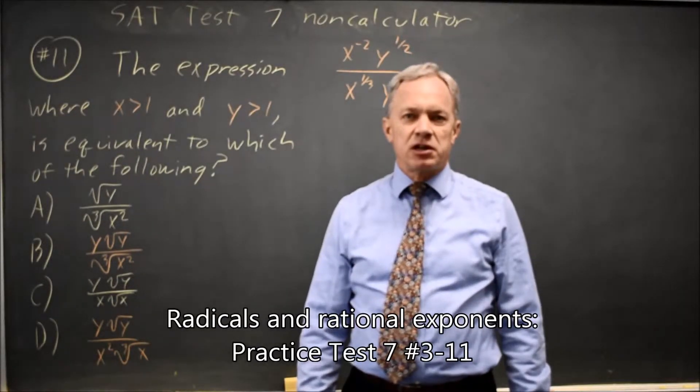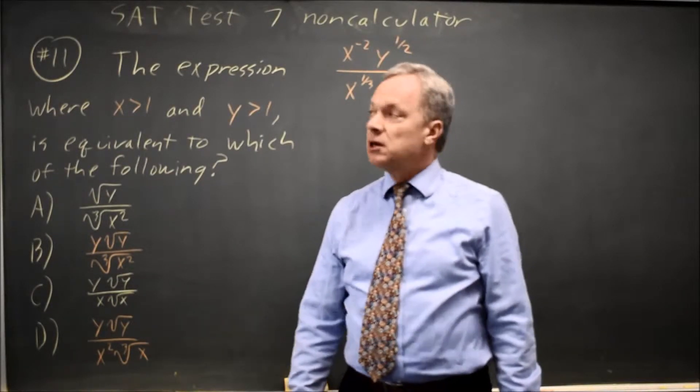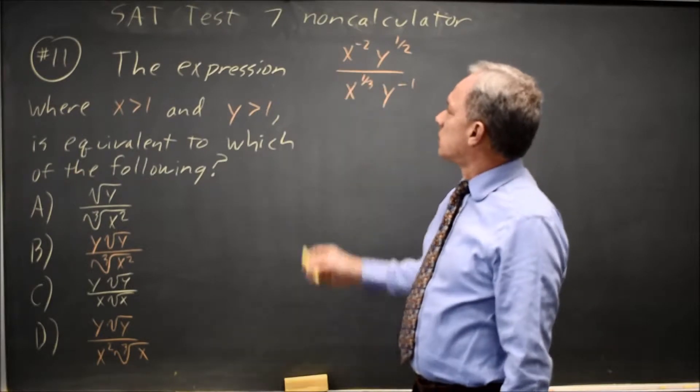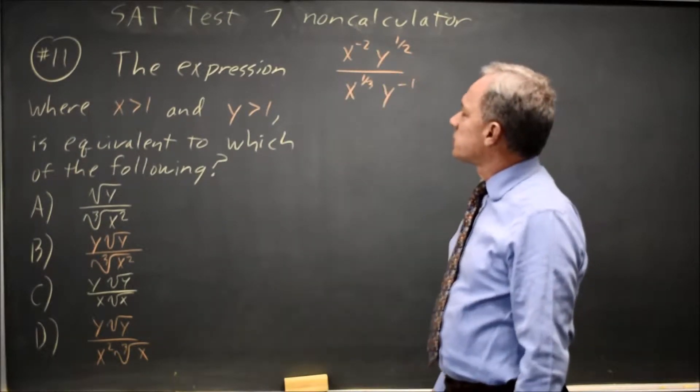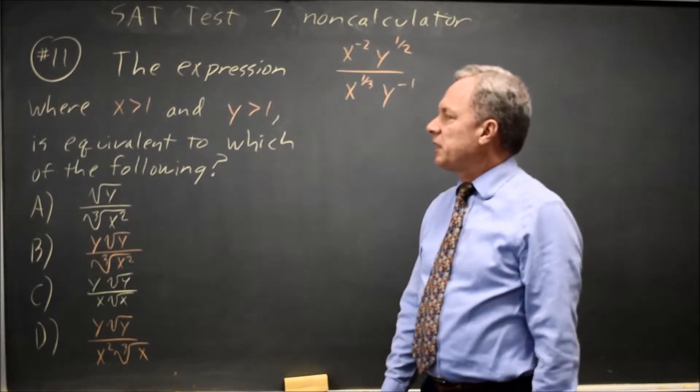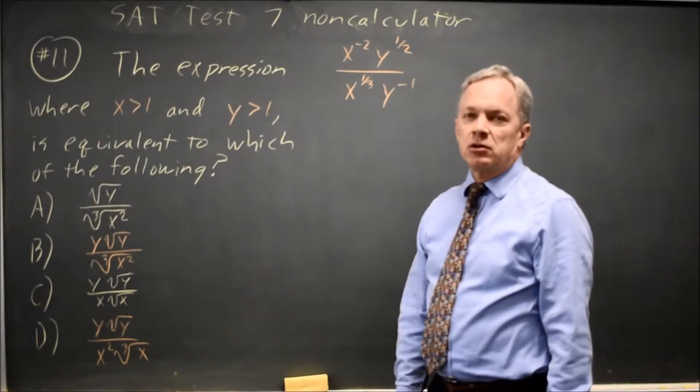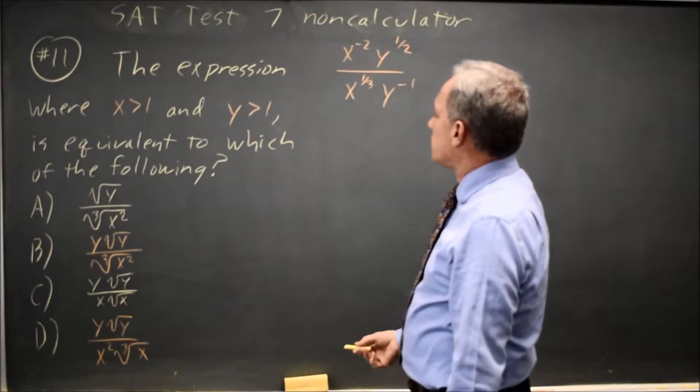This is SAT Test 7, non-calculator question number 11. College Board gives us a fraction with rational exponents and negative exponents and asks which of these fractions with radicals is equivalent.